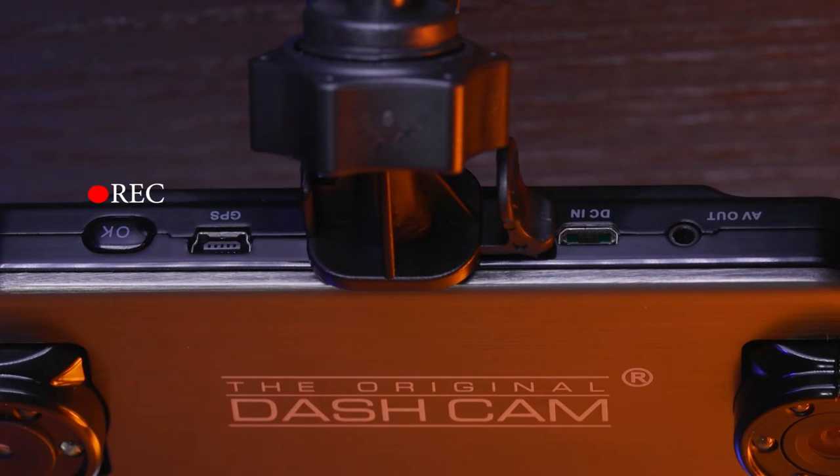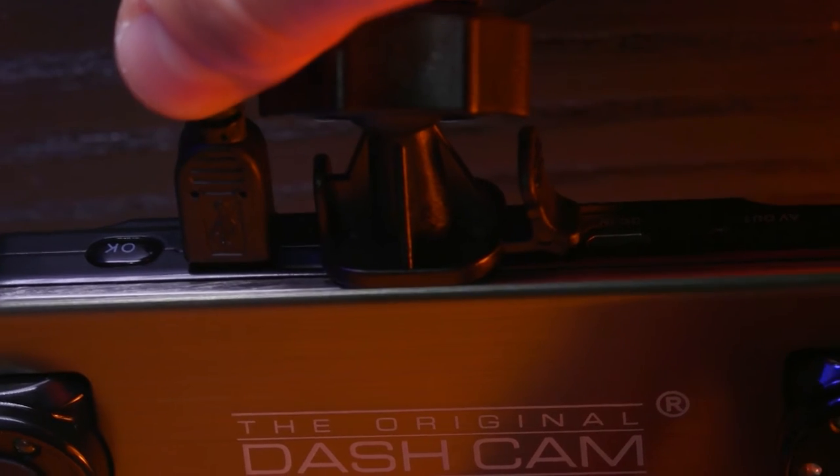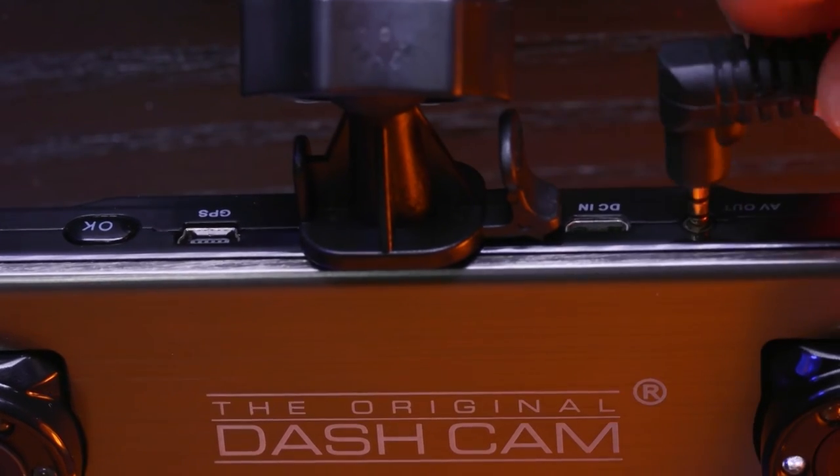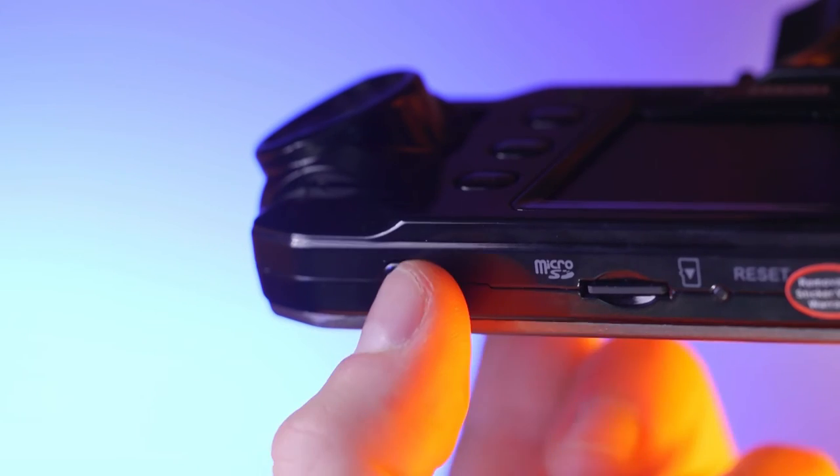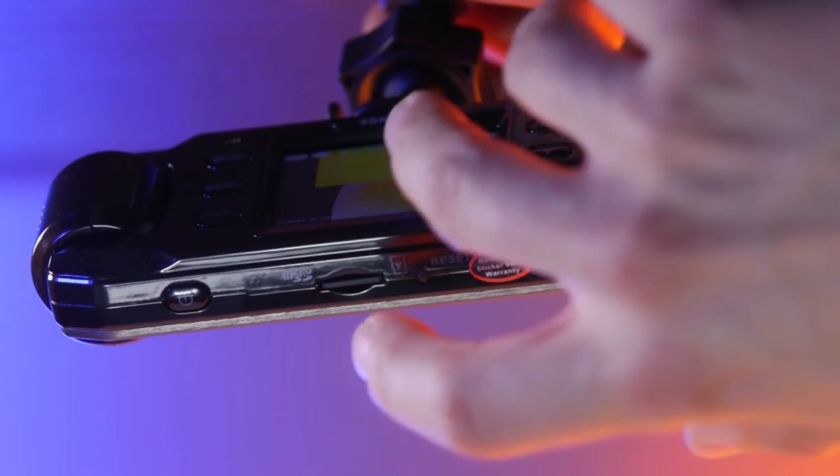On the top of the dashcam we have the OK button, which is the record and confirm button. Then we have a GPS input, DC power input, and audio video out. The bottom is home to the power button, micro SD slot, and the reset button.